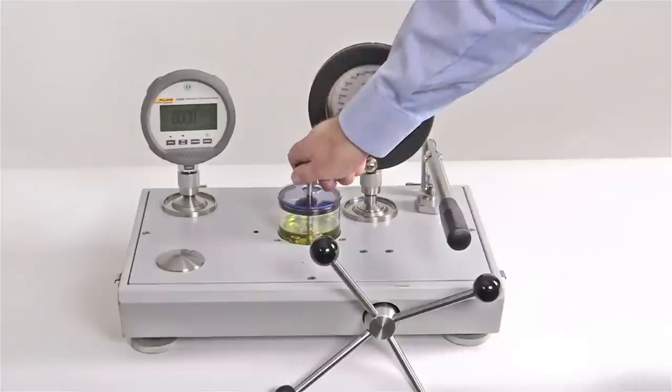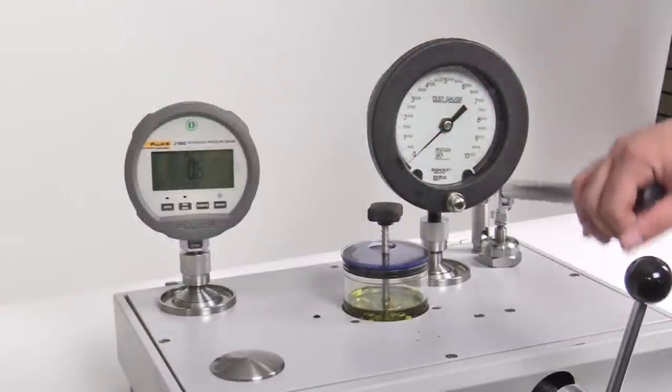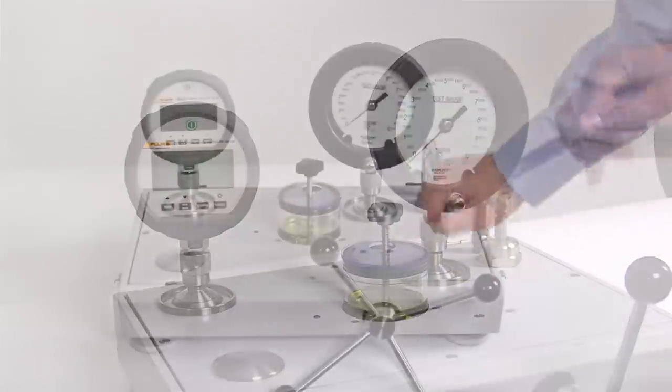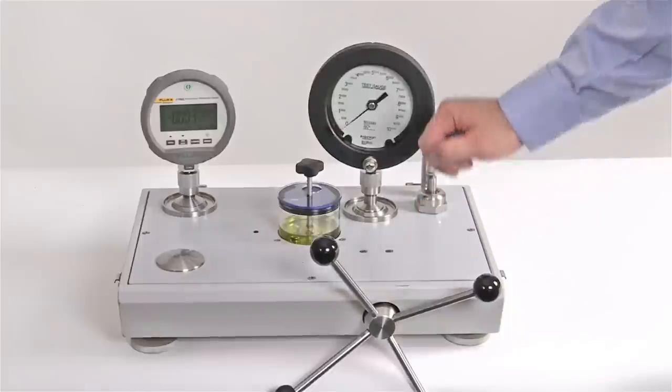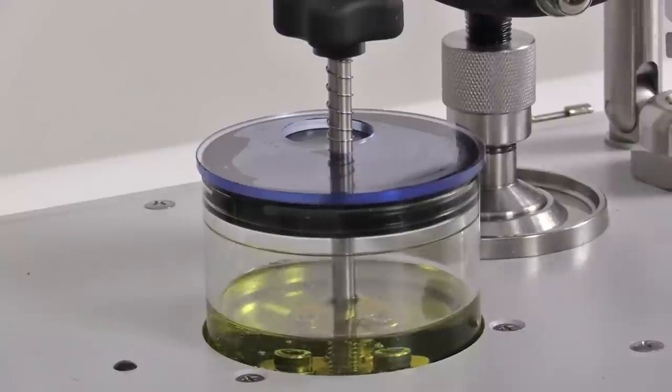With the reservoir valve open, the built-in priming pump can then be used to prime the system. The priming pump includes a check valve system so that the fluid is drawn from the reservoir and pushed through the system. The air in the system is then pushed out through the reservoir.